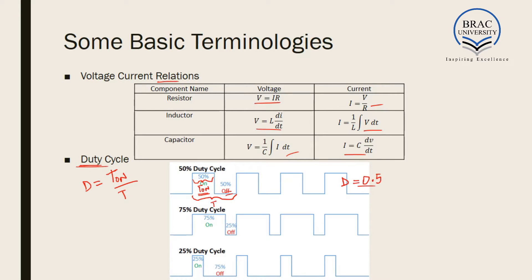That is, half the time it is on and half the time it is off. Similarly, here 75% on and 25% off, so D = 0.75. And here D = 0.25. We will see later that duty cycle plays a very important role in power electronic circuits and different voltage and current relations.